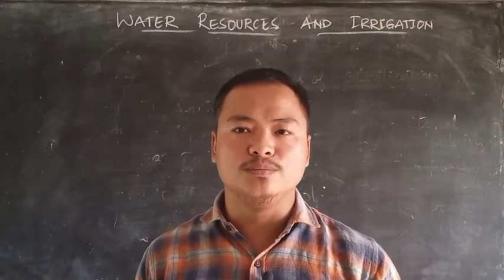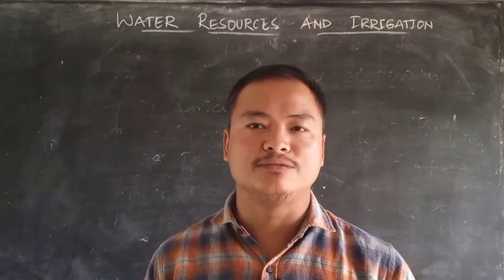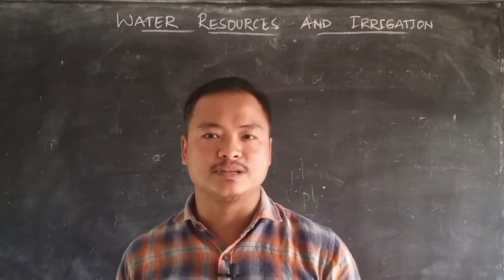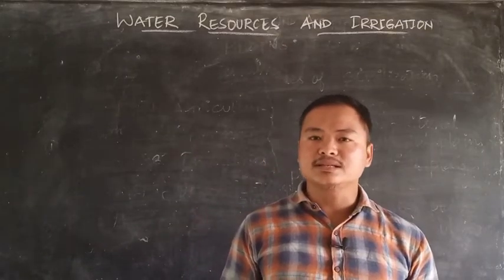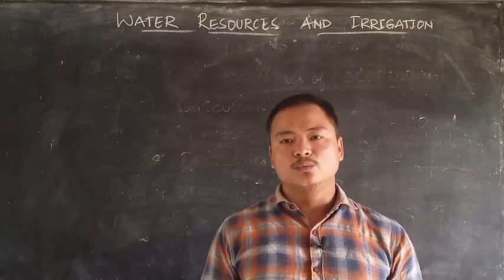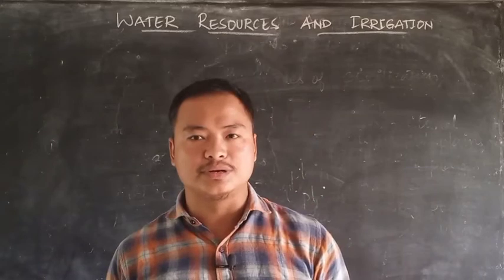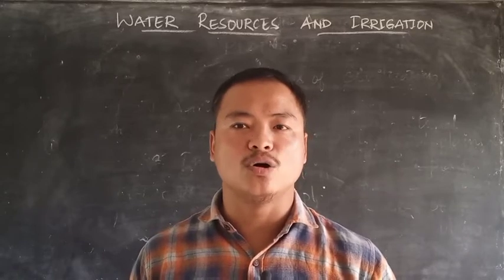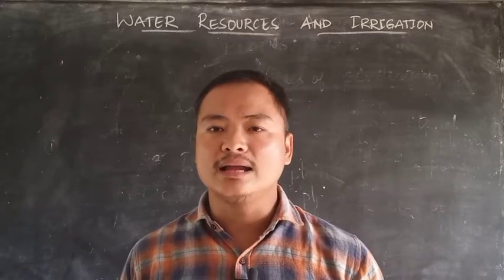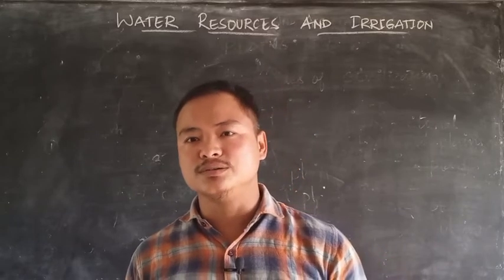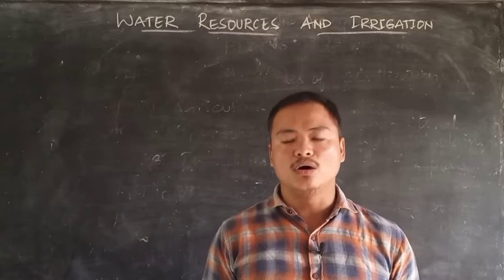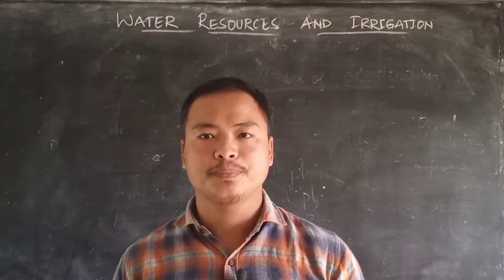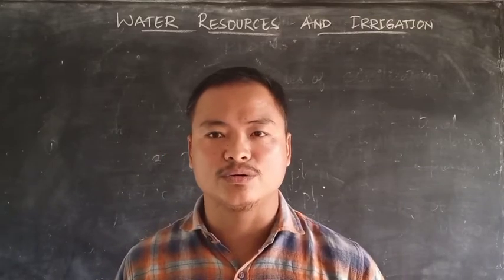If all the water that we have on this globe would have been usable, then today we would not have been fighting with water crisis. And when we consider India, the world's second largest populous country, water crisis or problems have always been either because of non-judicious utilization of water that is available, or because of sheer unavailability of water resources. A country like India with 130 crores of population requires a huge demand of water.